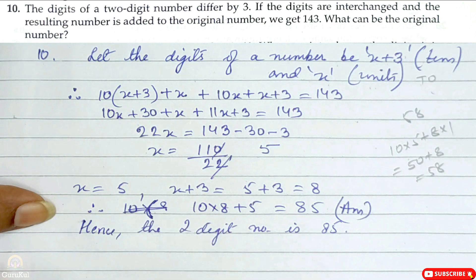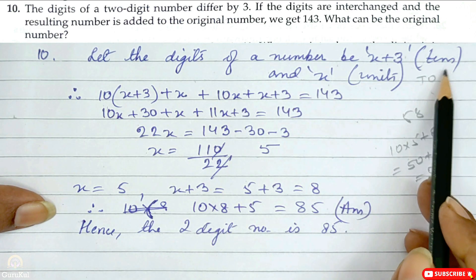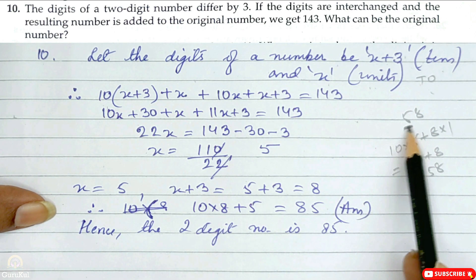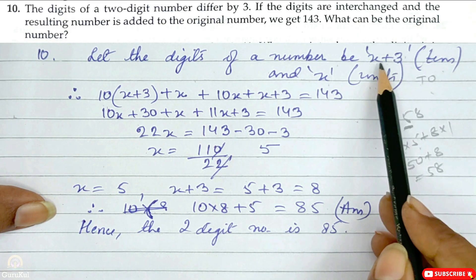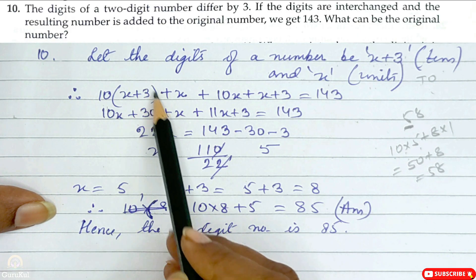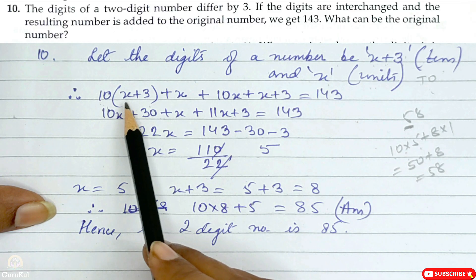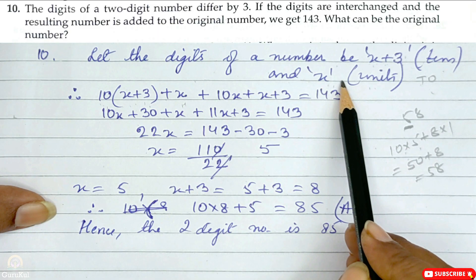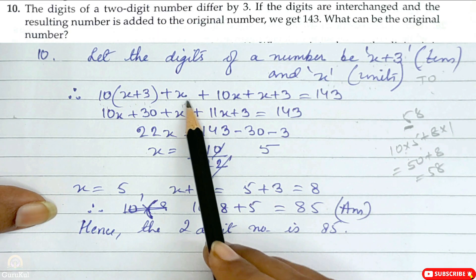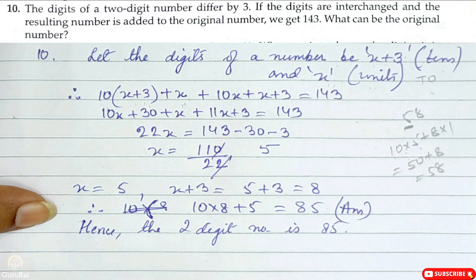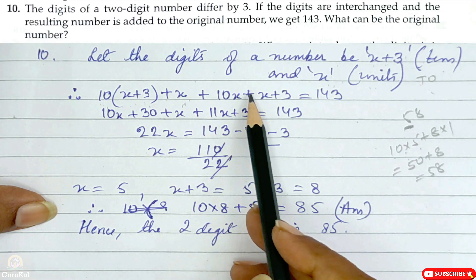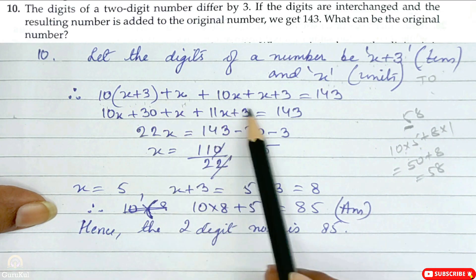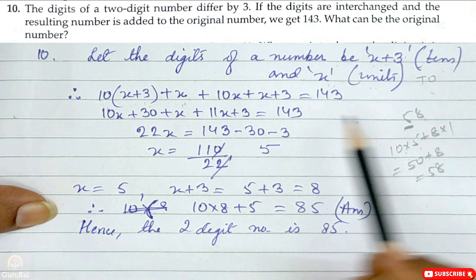So the original number in expanded form is 10(x plus 3) plus x. When we interchange the digits, the tens become x and units become (x plus 3), similar to how 58 becomes 85. So the interchanged number is 10x plus (x plus 3).